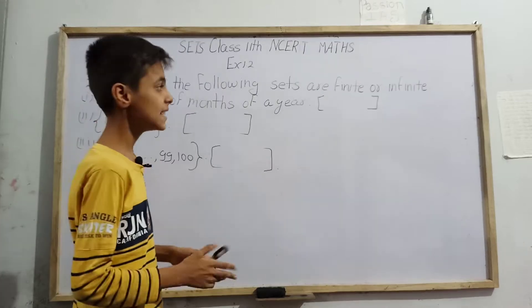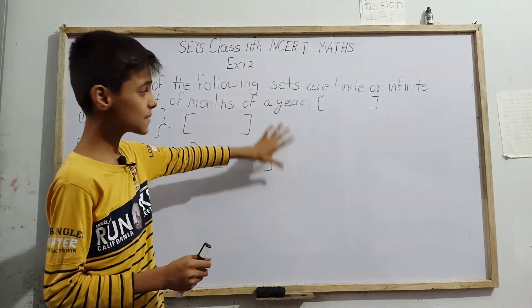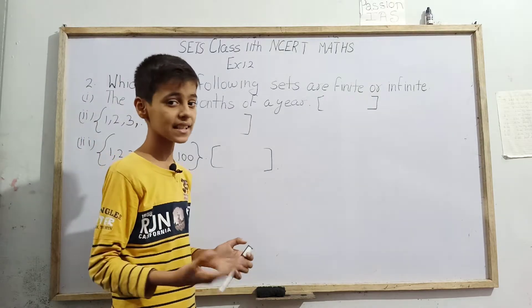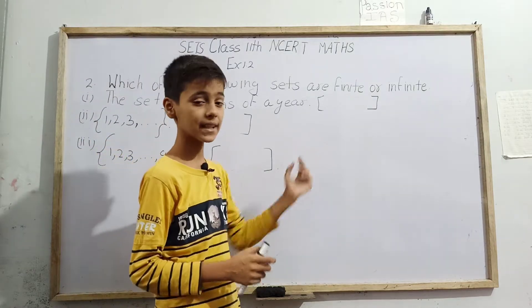The question number 2 is: which of the following sets are finite or infinite? The question is asking that some sets have been given to us here. Now it is asking whether they are finite sets or infinite sets.